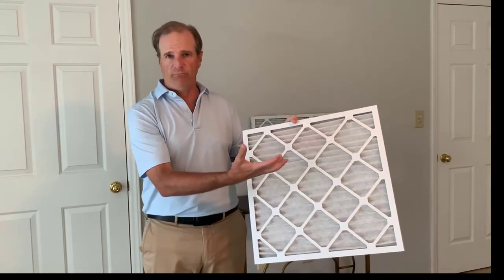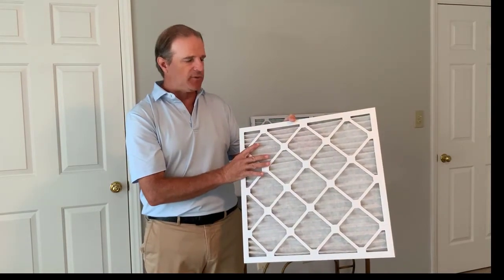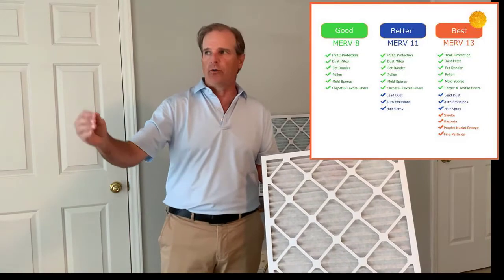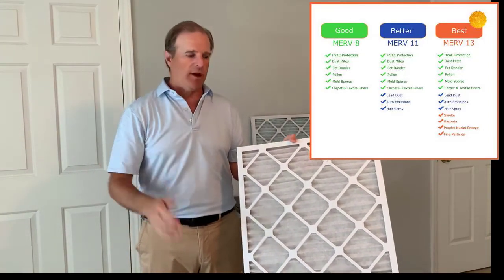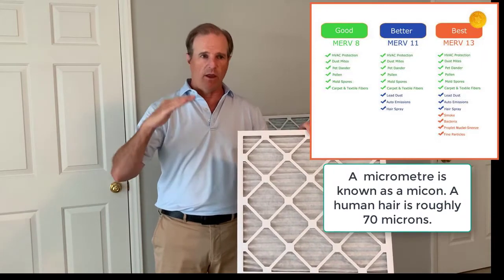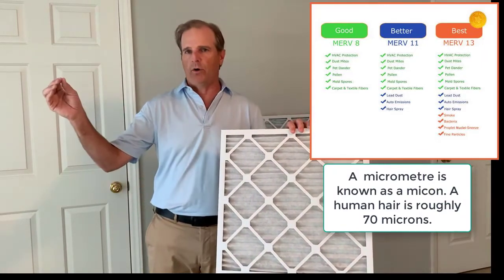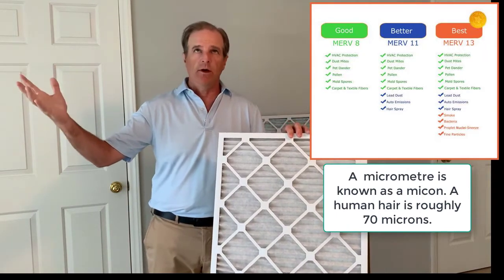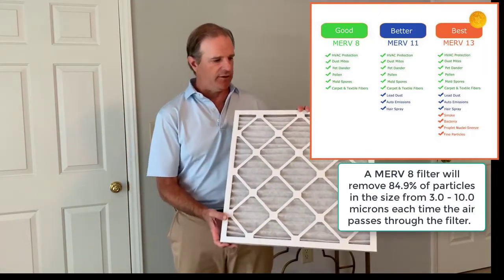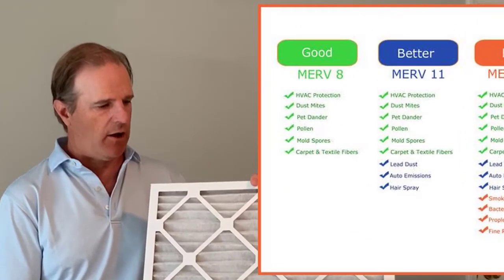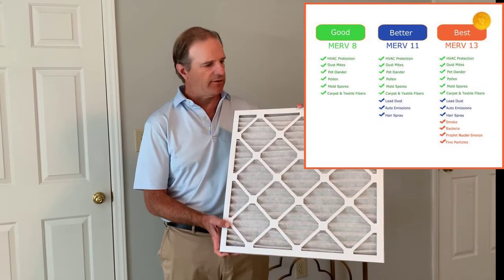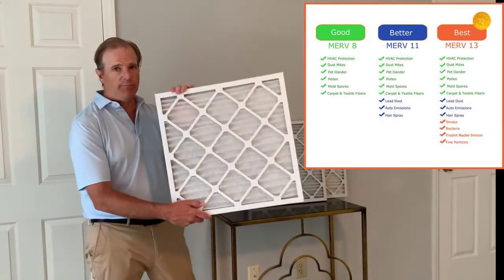The way to evaluate one filter brand against another is to look at efficiency. MERV 8 filters particles generally in the range of 3 to 10 microns. A micron is a very small measurement — roughly 70 microns is the size of a human hair. So we're talking about small particles like dust and dust mites, which is what MERV 8 filters out. They also filter out pollen, lint, and some larger particles. This is a good beginner level of filtration.